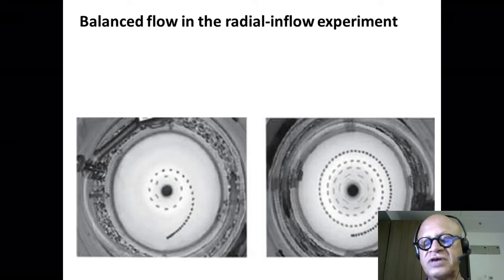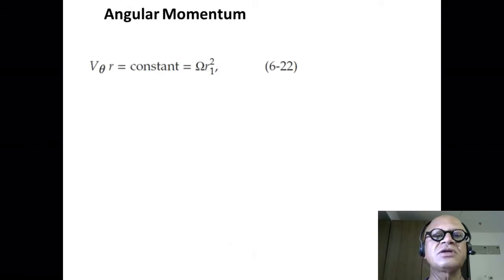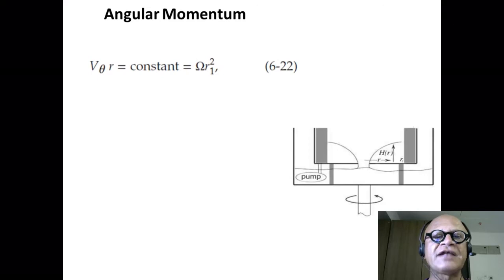The balances of angular momentum we had here, remember we had the inertial framework where you stand outside the water tank and look at it. V_theta R equals constant was omega R1 squared where R1 was this radius of the tank with the drain in the middle. There was water being released at the middle. There was water being released at the edges with very little relative velocity, so basically the rotational velocity of the tank itself.